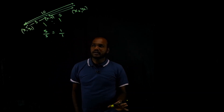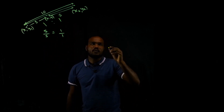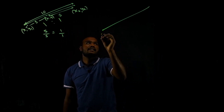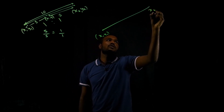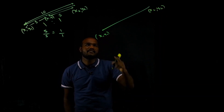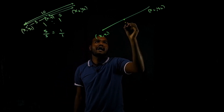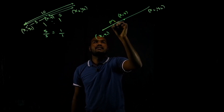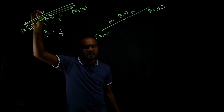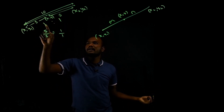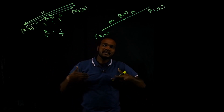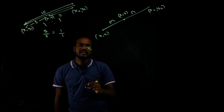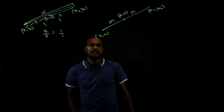So we can say this point is dividing this distance in a 1 is to 1 ratio. There is a formula for finding the coordinates when the ratio is given. If x1 comma y1 and x2 comma y2 are the two points, and x comma y is the point dividing in the ratio m is to n, we need to find x and y.